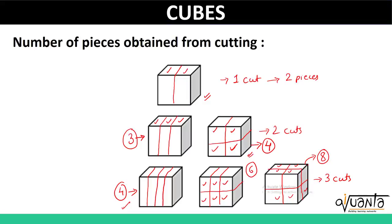One thing you should keep in mind while solving questions based on cubes is that you should have good visualization of the situation, because for each different situation you have to visualize differently. You should be able to picture how the cuts are being made and how the cube is being divided. From these cases, what we can see is that for the same number of cuts, we can have different numbers of pieces. We'll use this concept while minimizing and maximizing the number of pieces obtained after cutting a cube.